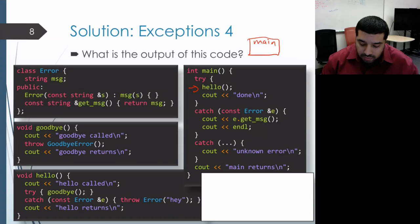It enters the try block and makes a call to the hello function. So we get an activation record for hello. And execution proceeds to the body of hello, and that prints out hello called.